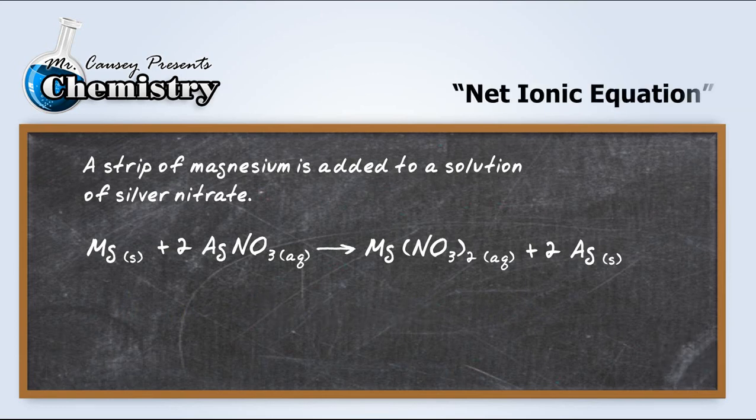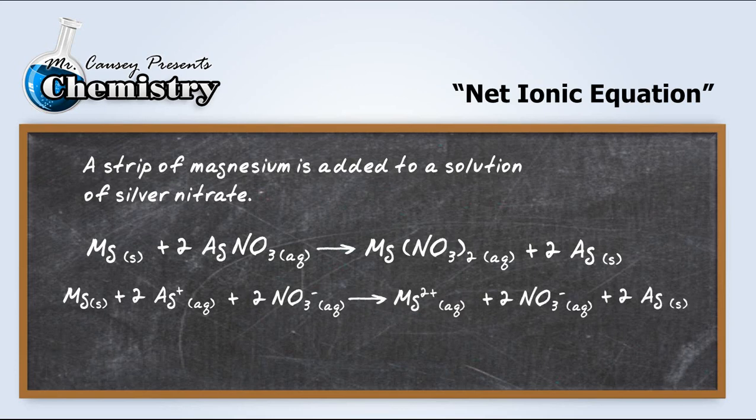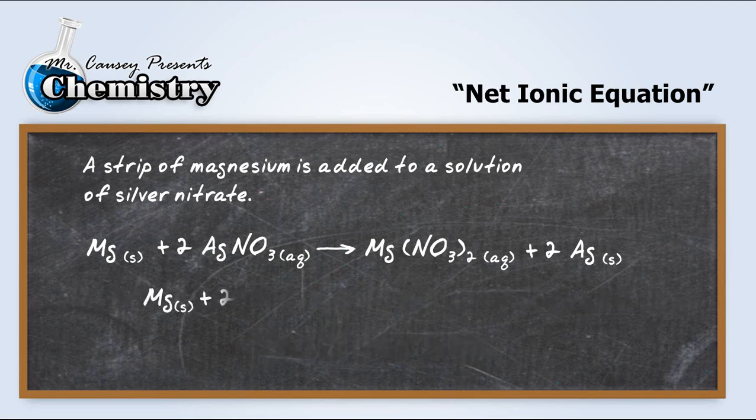Let's jump over and let's write the net ionic equation. Magnesium, and there's our silver nitrate. Write it all out as ions. Now we have some ions that are not changed, or they are unchanged. So we'll cross those out. All the spectator ions are gone. And now let's rewrite it.